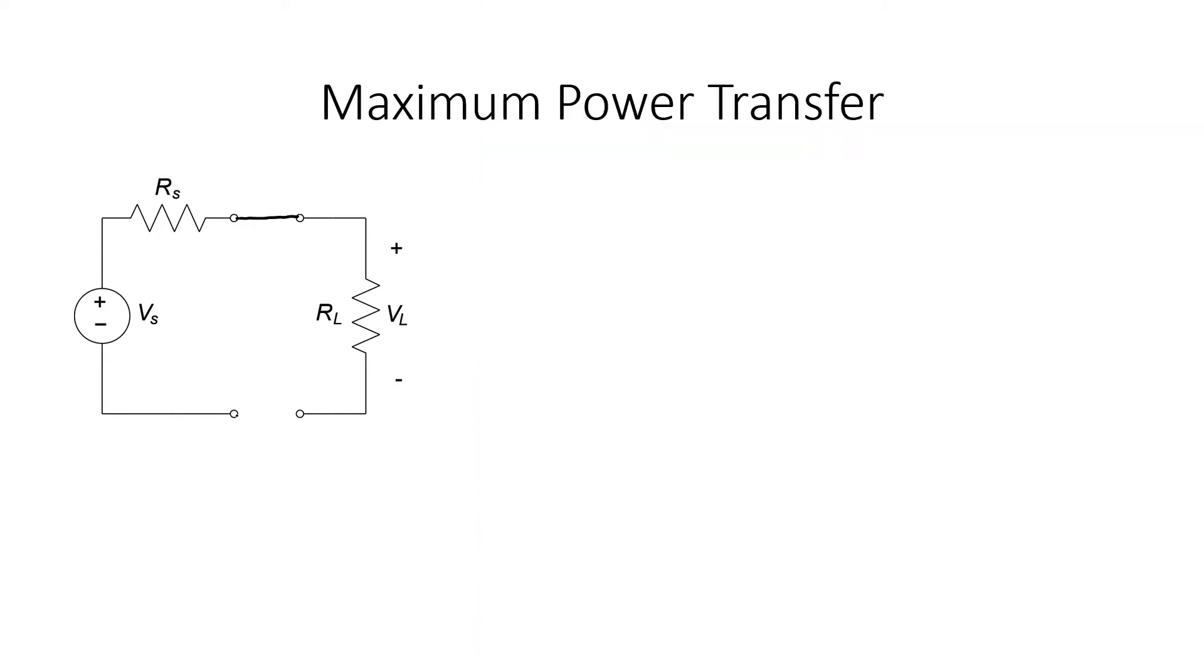The power in the load resistor here is V squared divided by R. Let's now find V sub L in terms of our source voltage, V sub S. We can use a voltage divider. Let's square it and substitute it into this equation for power.